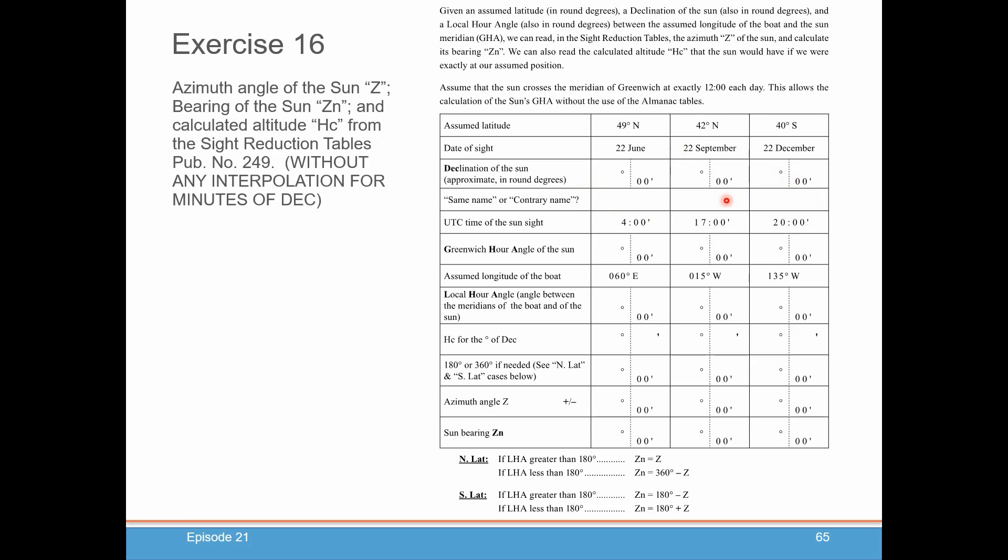From there, you'll be able to indicate whether the boat, which is at these latitudes, is going to be same name or contrary name. This gives you the UTC time of the sun site, which is going to help you knowing that the sun crossed the Greenwich Meridian at 12 o'clock, what the Greenwich hour of the angle of the sun is. Here's your assumed longitude of the boat. Knowing these two, you should be able to calculate LHA. Going into the sight reduction tables, you're going to pull out the HC for the degrees of declination. Then you're going to calculate Zn from Z, and here's just a reminder of how you get Zn from Z.